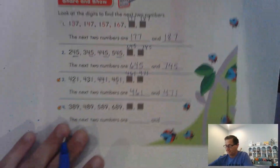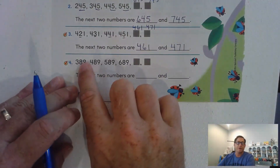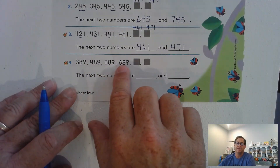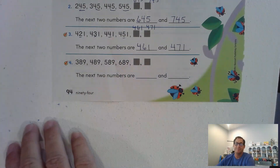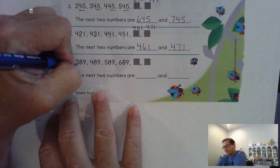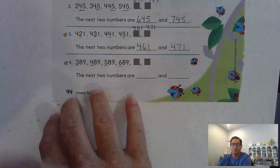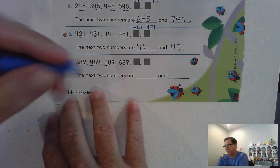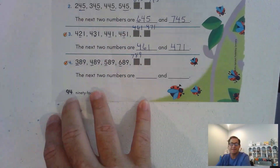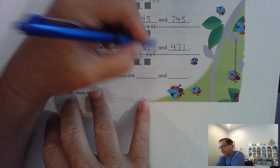Number four: 389, 489, 589, 689. The only digit that's changing is the hundreds, and we're adding 100 each time. So the next number in the pattern would be 789, and then 889.